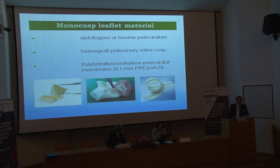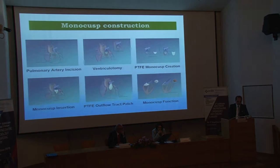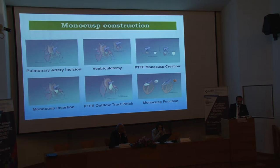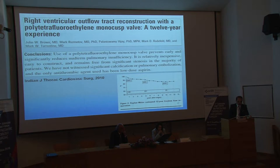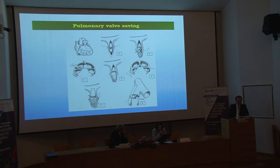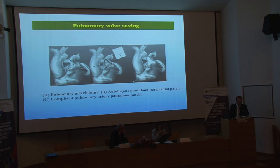The second technique for RVOT reconstruction is creating the monocusp. The leaflet material for monocusp can be either autologous or bovine pericardium, homograft valve cusps, or PTFE pericardial membrane. After the sizing of the pulmonary annulus, the appropriate size of PTFE patch is cut and placed in the pulmonary annulus, which is roofed with a transannular patch. In a 12-year experience with PTFE monocusp reconstruction, John and colleagues reported that the use of PTFE monocusp valve prevents early and significantly reduces mid-term pulmonary insufficiency, and it is inexpensive and easy to construct.